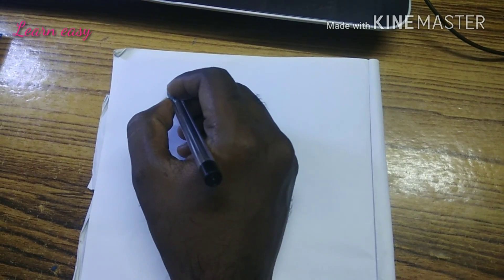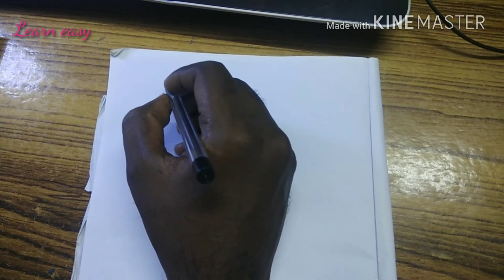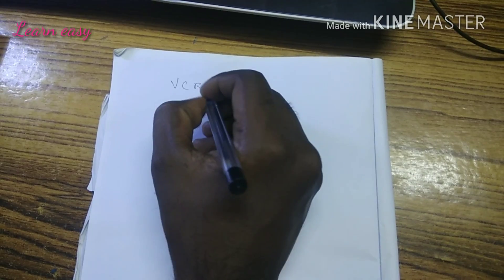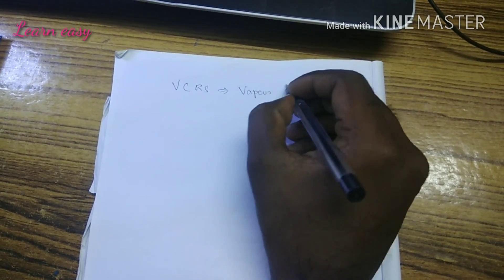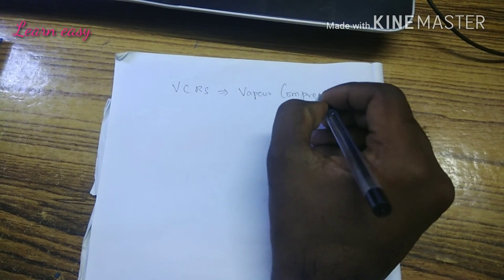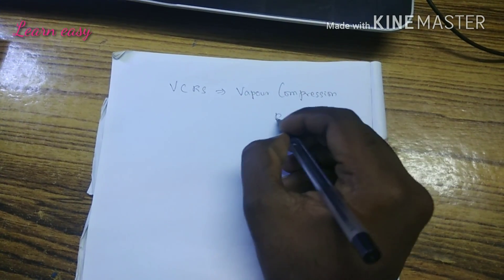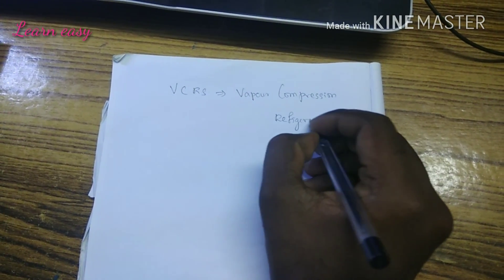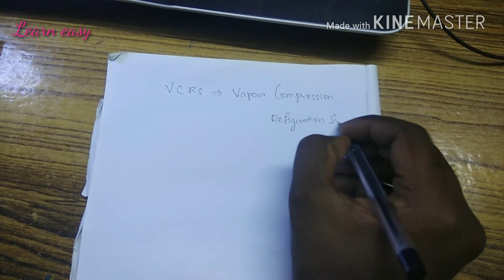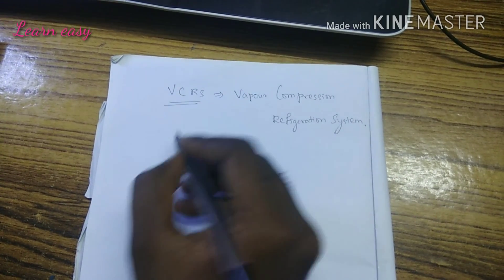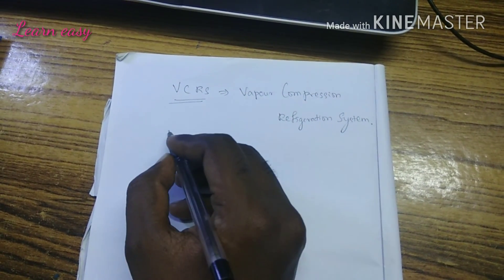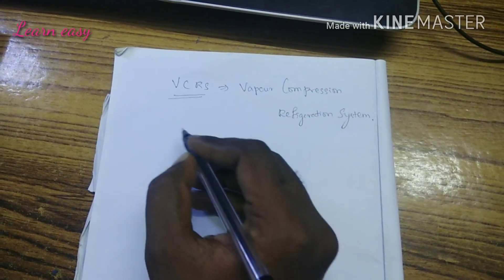First, we are going to discuss the Vapor Compression Refrigeration System, VCRS, which is a simple cycle.